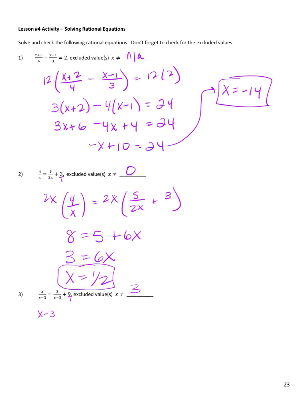x minus 3 times x over x minus 3 equals x minus 3 times 3 over x minus 3, plus 9. On the left, the x minus 3's cancel and I just have an x. On the right, I do x minus 3 times the first fraction — the x minus 3's cancel and I just have the 3. Then I still have to multiply x minus 3 by the other term in parentheses, 9.